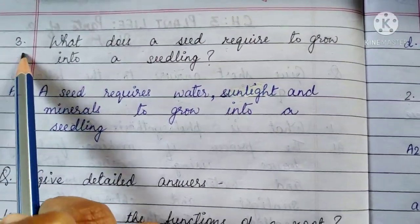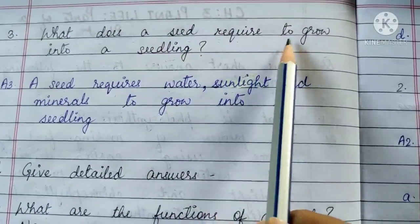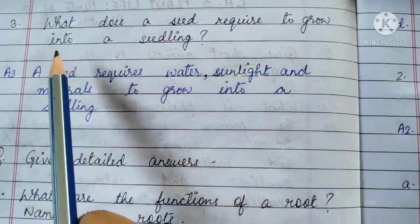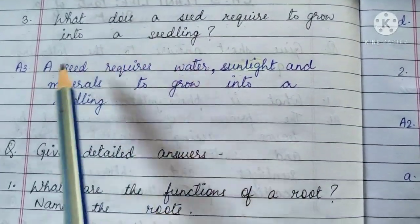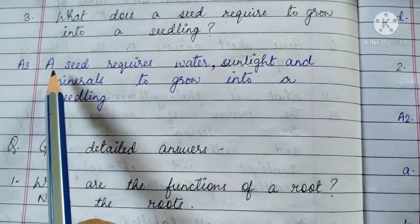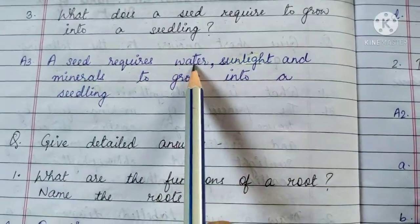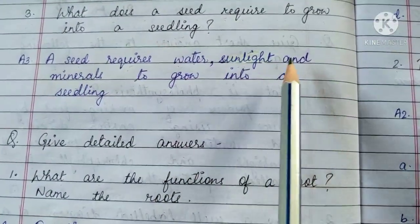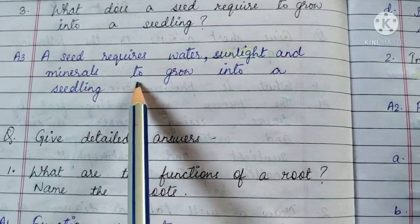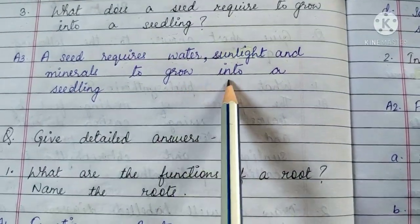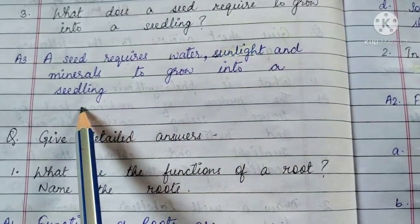Question 3. What does a seed require to grow into a seedling? Answer. A seed requires water, sunlight and minerals to grow into a seedling.